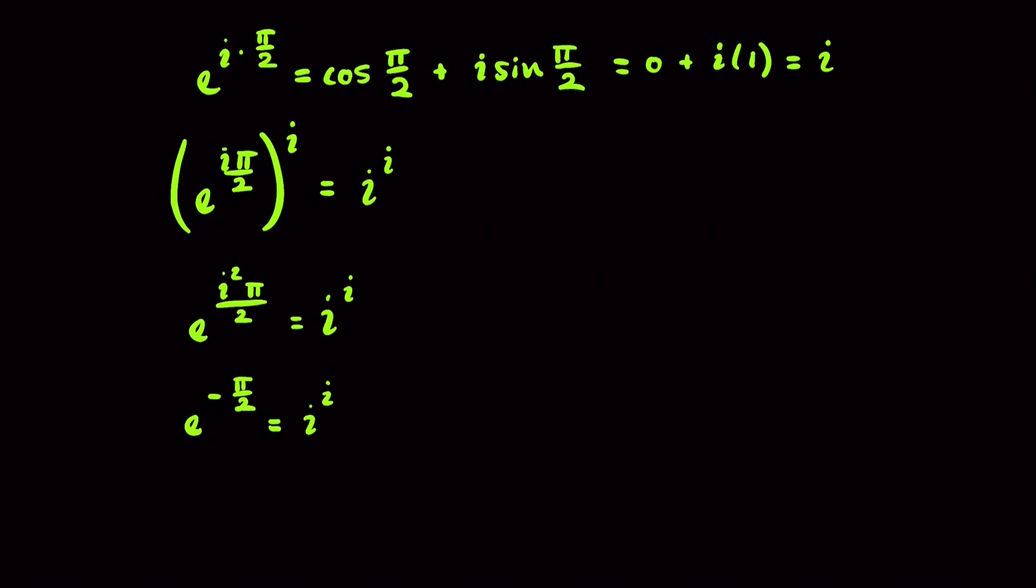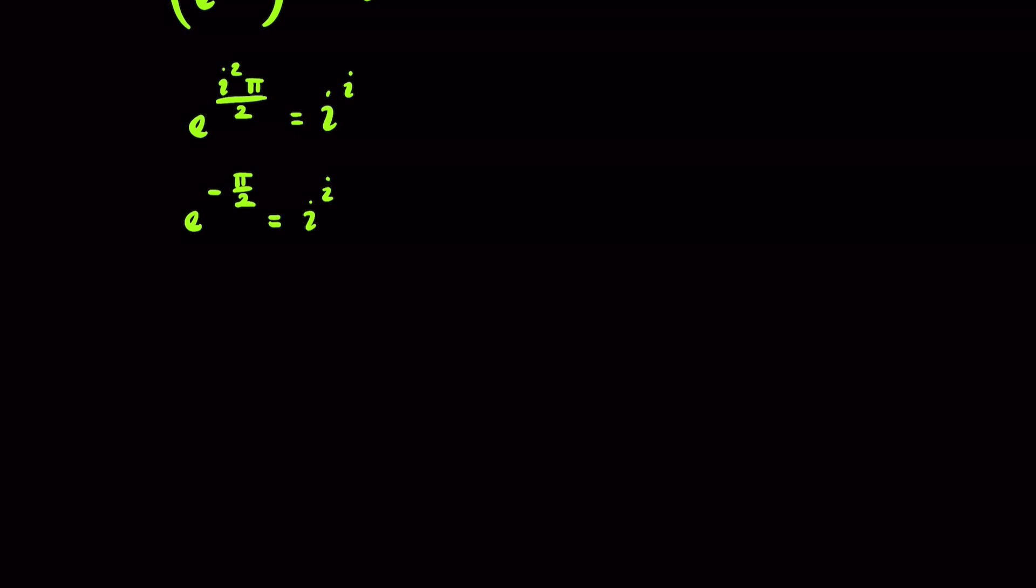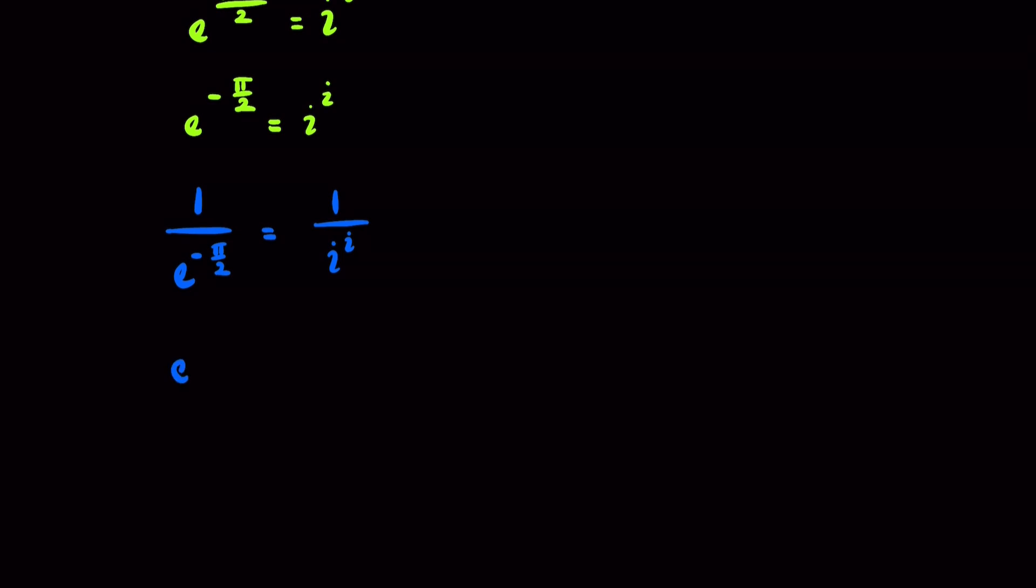What an insane result. Now, let's take a look at something else. What if we took the reciprocal of both sides? We would have 1 over e to the negative pi over 2 equal to 1 over i to the i. Now, this is the same thing as e to the pi over 2 equal to i to the negative i.